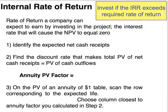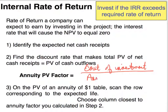We're going to identify the expected net cash receipts from the investment. We're then going to find the discount rate that makes the total present value of the net cash receipts from the asset equal the present value of cash outflows from the asset. We're going to be looking for the annuity factor — the annuity present value factor — and to do that, we take the cost of the investment and divide that by the annual net cash inflows from the asset.